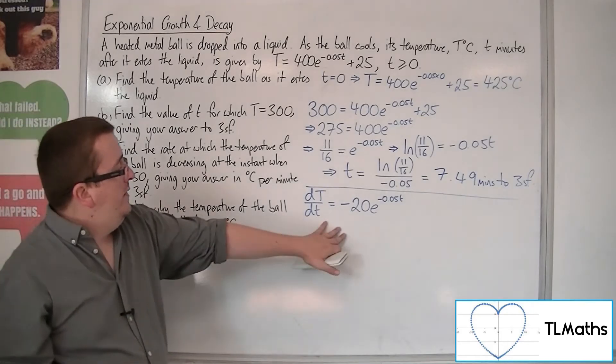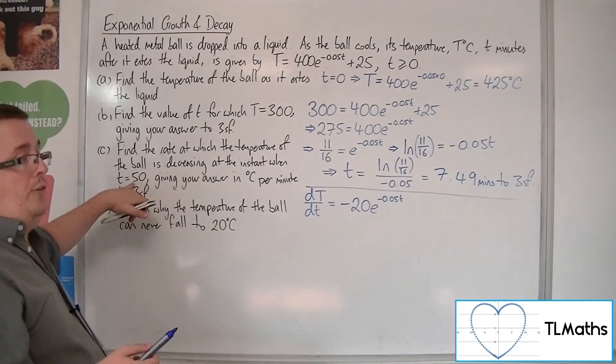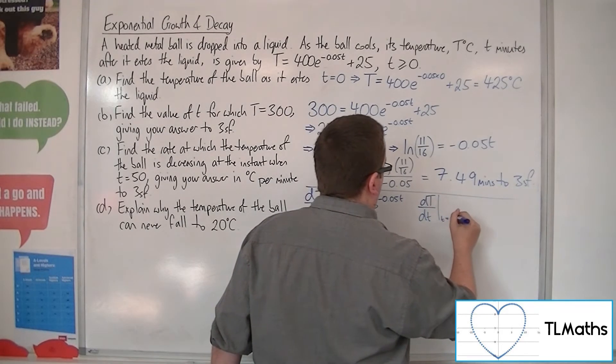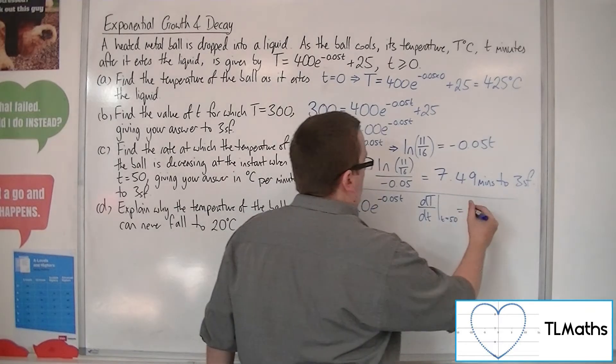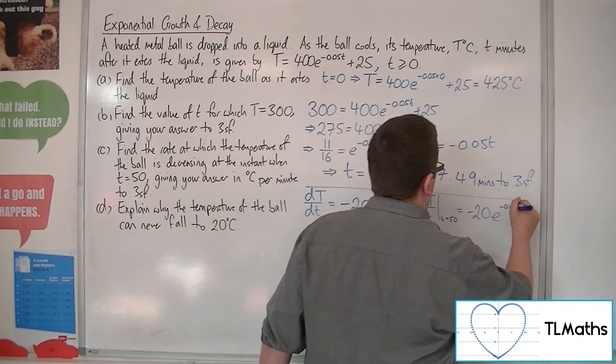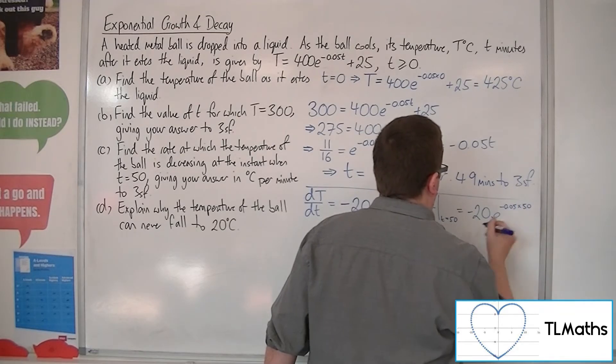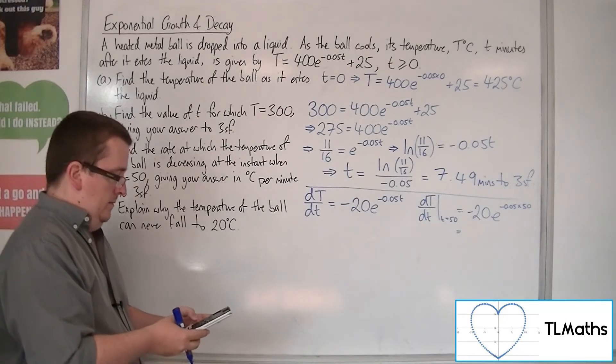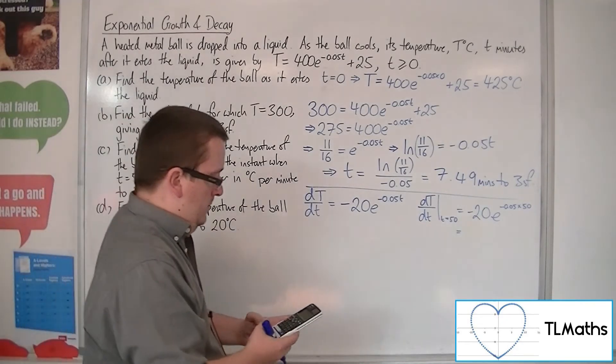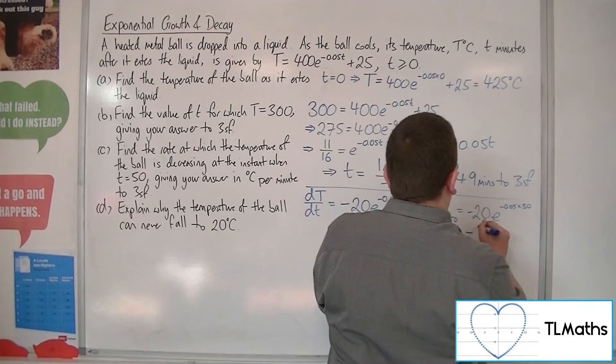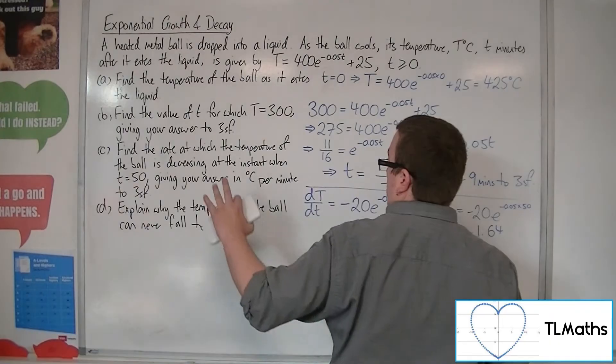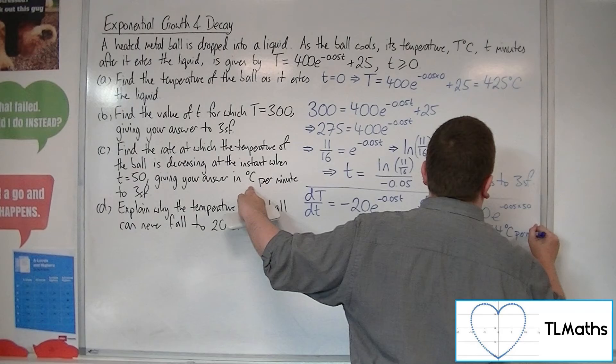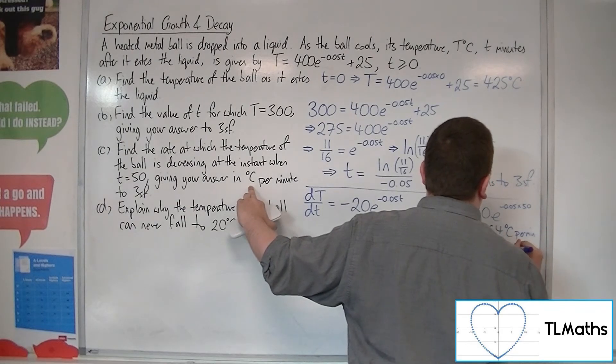We now need to evaluate this when T is 50. So, DT by DT when T is 50 is equal to minus 20 E to the minus 0.05 times 50. So, plug that into your calculator.